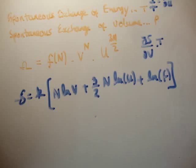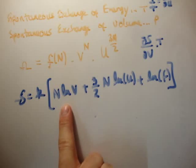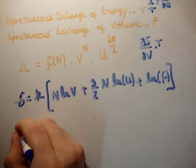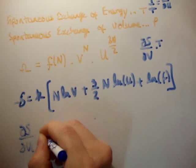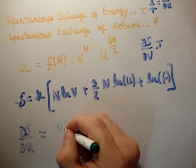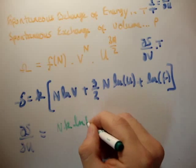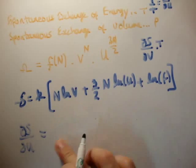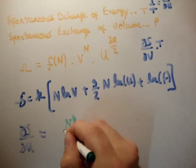We need to get the derivative with respect to V. But this isn't a function of V and neither is this. So del S del V is simply going to be equal to N K over V.